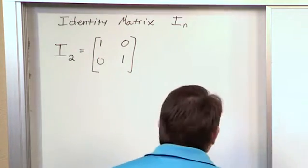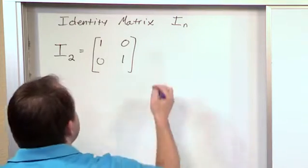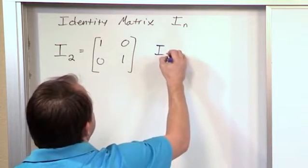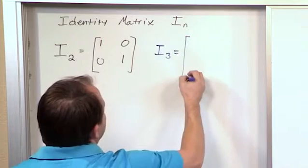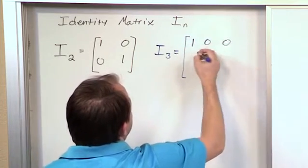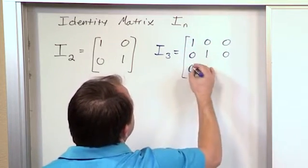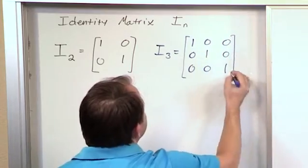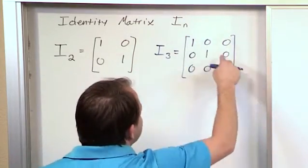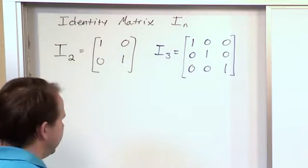Now we can also have, for instance, an identity matrix I sub 3. What do you think that would look like? Well, it's going to be 1, 0, 0, 0, 1, 0, 0, 0, 1. Notice in this case, we have ones along the diagonal, zeros everywhere else on the off diagonal elements.